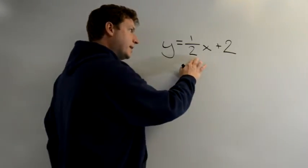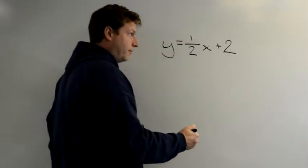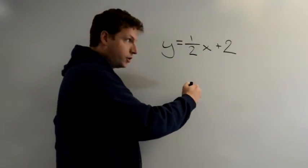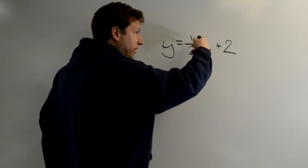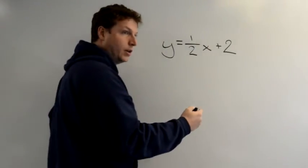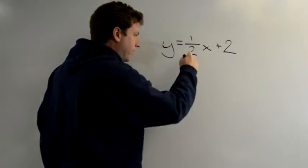Here the slope is M which is always right in front of the X. To find the perpendicular slope we need to flip it, we find the reciprocal and then we make it negative. So the first thing to do...